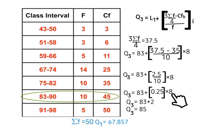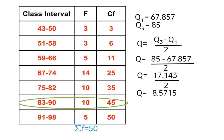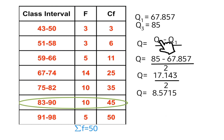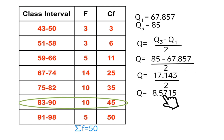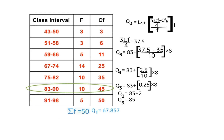0.25 times 8 gives 2, so Q3 equals 83 plus 2 equals 85. To calculate the semi-interquartile range, we use the formula: (Q3 minus Q1) over 2. That is (85 minus 67.857) over 2, which equals 17.143 divided by 2, giving us 8.5715. I hope this video is helpful to everyone.